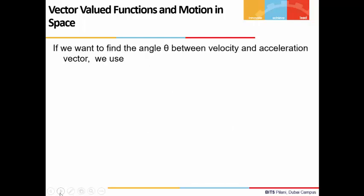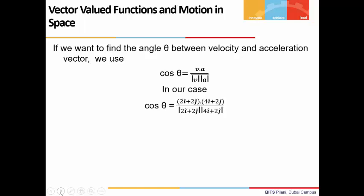If we want to find the angle θ between the velocity and acceleration vectors, we use the formula cos θ = (v · a) / (|v| |a|). In our case, the dot product of velocity vector 2i + 2j and acceleration vector 4i + 2j, divided by the magnitude, comes out to be 0.95. This gives us θ = 20 degrees.